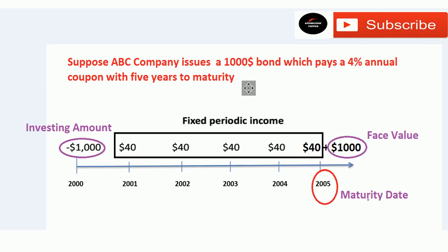However, there are callable bonds as well as puttable bonds that have a defined lifespan, but these bonds can be redeemed before their maturity date. To know more about callable and puttable bonds, watch our videos on those topics that I have already made.